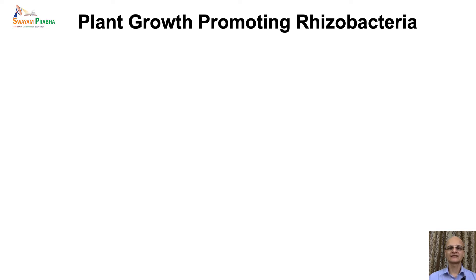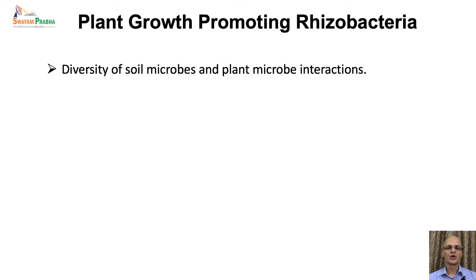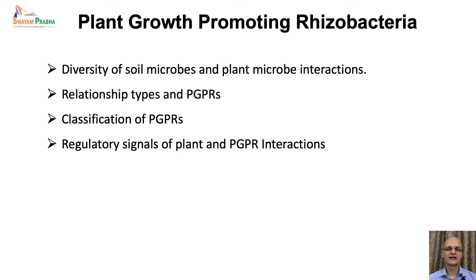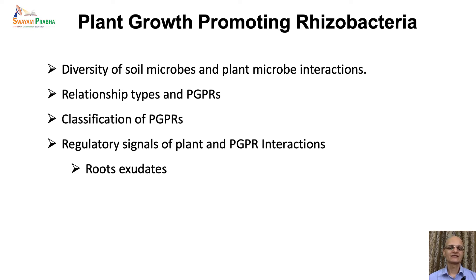A quick recap from the last lecture about PGPRs: we talked about the diversity of soil microbes in plant-microbial interactions, and discussed various relationship types — that is, the different levels of intimacy among plants and microbes. We also talked about PGPR classification and various regulatory signals of plant-PGPR interactions, like root exudates, which include organic compounds such as sugars, amino acids, organic acids, secondary metabolites, proteins, polysaccharides, etc., that are synthesized in the plant and secreted into the rhizosphere.